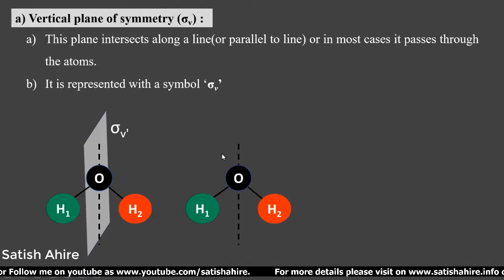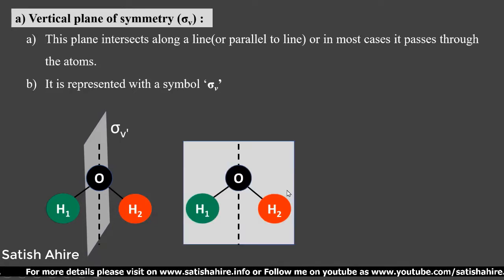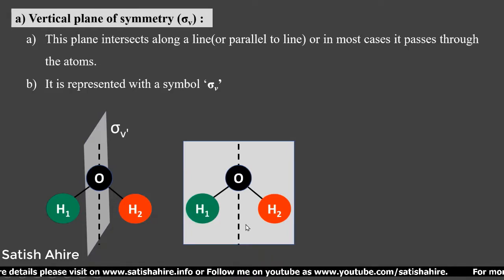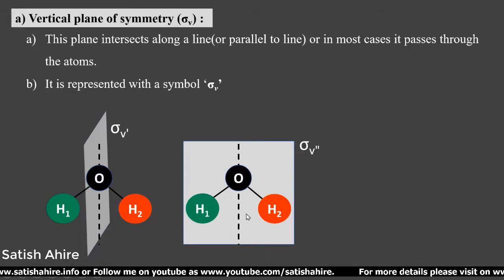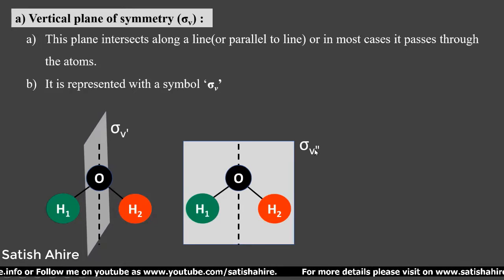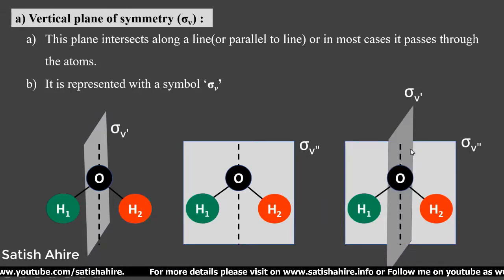The same water molecule also shows the presence of a second vertical plane of symmetry. This second vertical plane passes through the oxygen atom, the first hydrogen atom, and the second hydrogen atom. It divides the molecule into two equal parts that are mirror images of each other. This is represented with the symbol σv double prime.